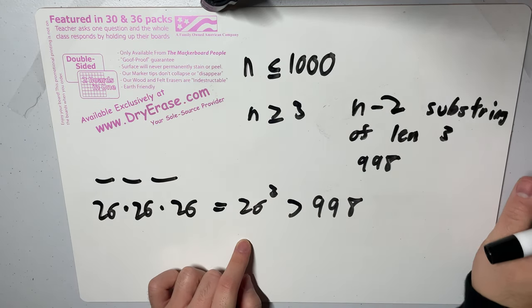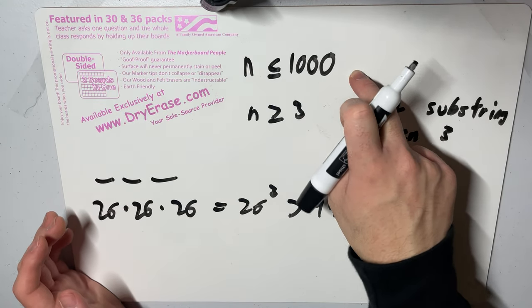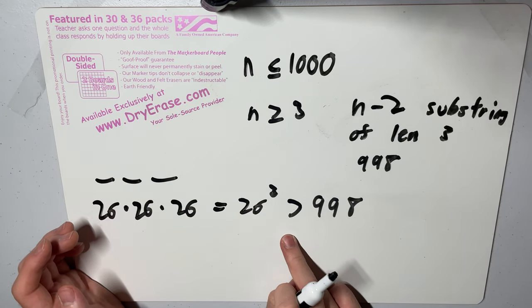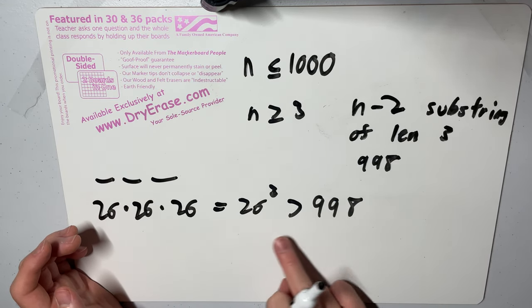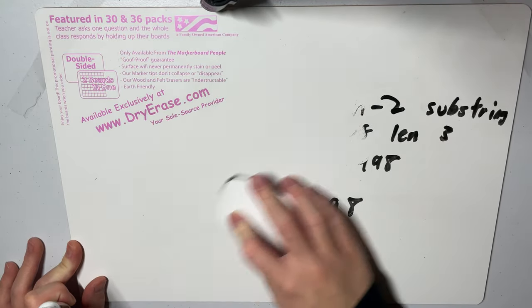So this means that there always exists at least one string of length three that doesn't appear as a substring in our input of n characters, because n is at most a thousand while there are much more than 998 possible strings of length three.